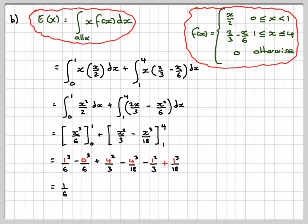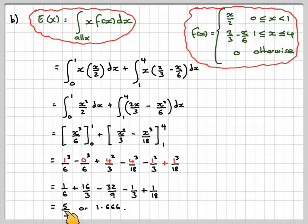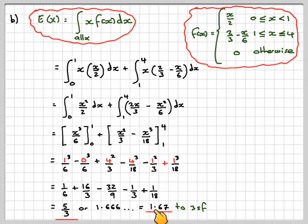That gives us 1 sixth, then 16 over 3, then 4 cubed over 18 comes down to 32 over 9, minus 1 third, plus 1 over 18. Using the fraction button on the calculator, we get 5 thirds. It's better to have an exact answer since we'll need it later, or round to 3 significant figures: 1.67.